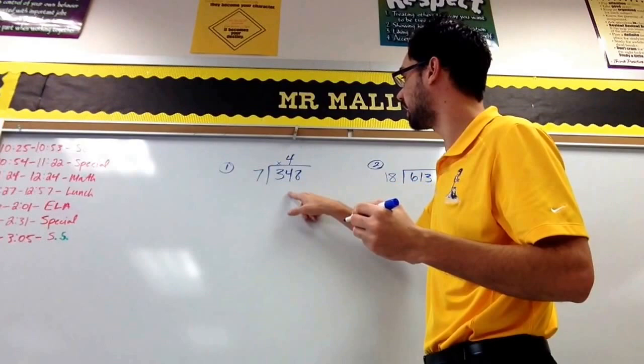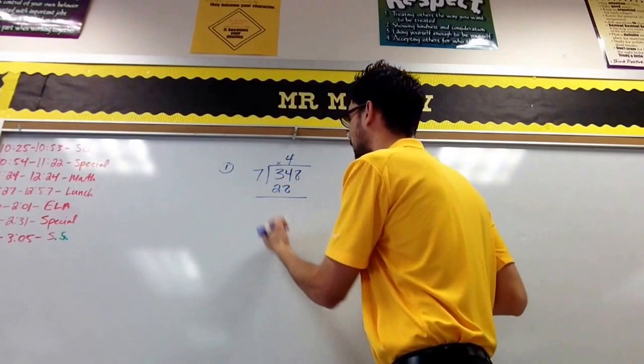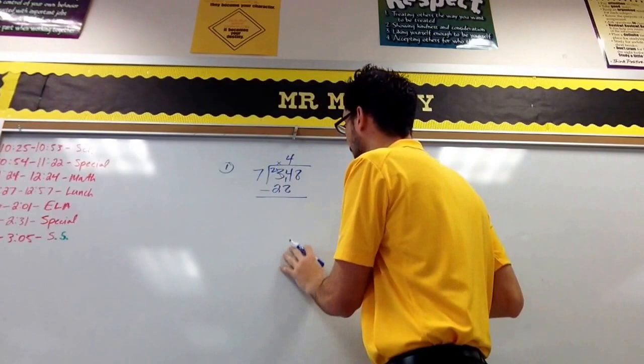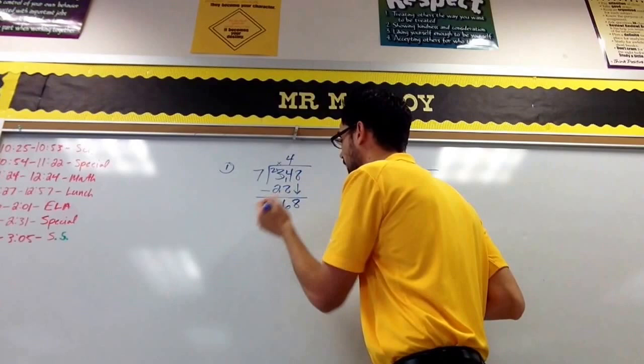When I work back around, it's going to be multiplication. Four times seven is 28. And then I'm going to subtract these numbers here, so do my regrouping. 14 minus 8 is 6, and then I drop down the 8. You only drop down one number at a time.